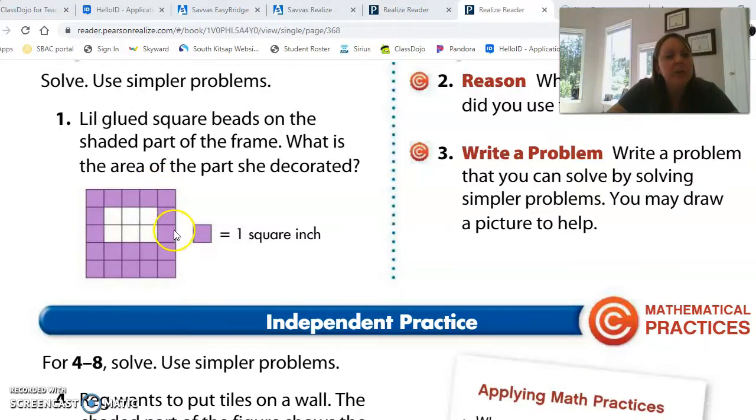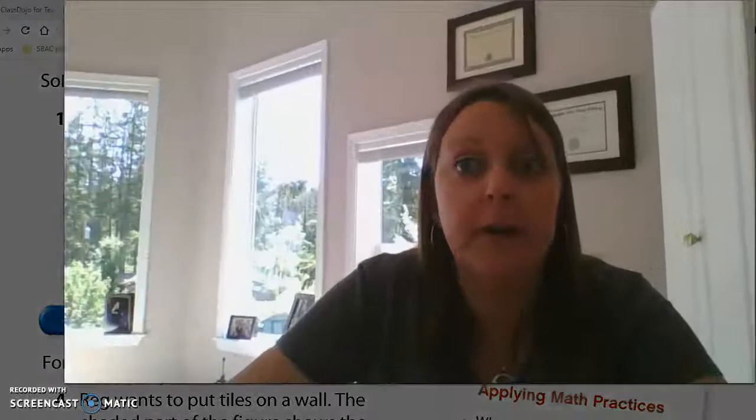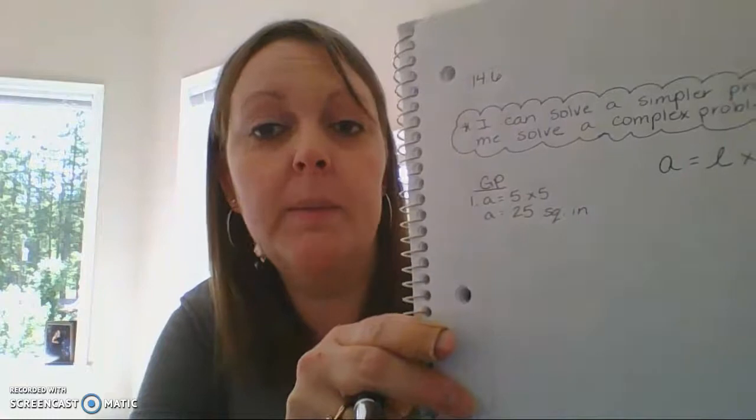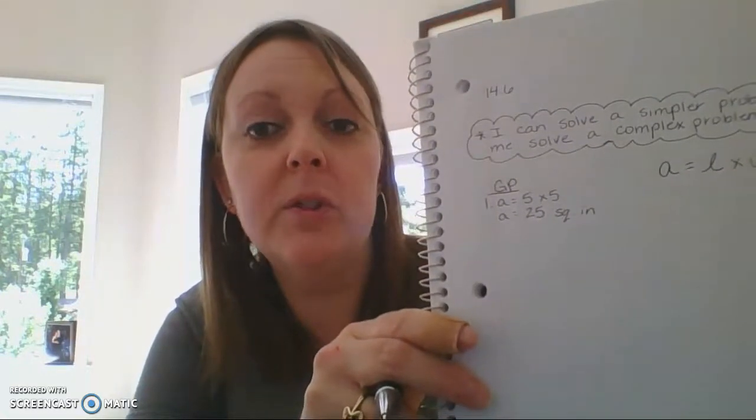So area equals five times, and one, two, three, four, five. Five times five. So the area of the purple section square, and I'm not going to forget to put down my units because that would be ridiculous. So my area for the whole purple square is five times five, which is 25 square inches.